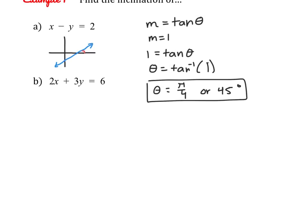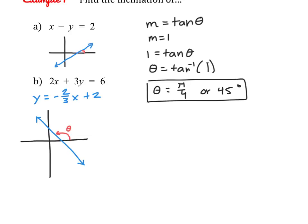Now let's look at part b. Let's draw a quick sketch. If I rewrite this equation in slope-intercept form, I get y equals negative 2 thirds x plus 2, so I have a line that looks something like this. If you look at what our angle of inclination would be, it's going to be an obtuse angle. So whatever number our calculator gives us for theta, it's not going to work — we have to adjust it. Using the same formula, the slope is negative 2 thirds, so negative 2 thirds equals tangent of theta, meaning theta equals arc tangent of negative 2 thirds.